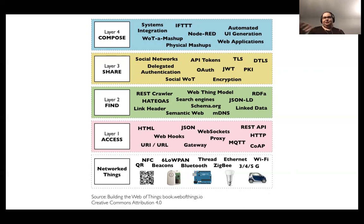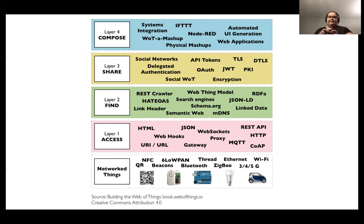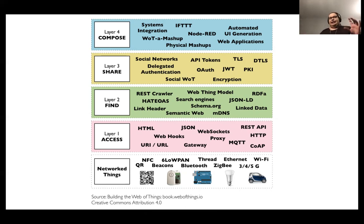We also have more specialized IoT protocols like Zigbee at the lowest level layer. So instead of using standard TCP/IP, we can also use other protocols to make the actual communication happen. Coming up, we have the access layer with quite familiar-sounding protocols: URLs, gateways, proxies, web sockets, and different REST APIs. I want to highlight two protocols we will discuss later in this course: CoAP and MQTT — specialized IoT protocols we will cover later.